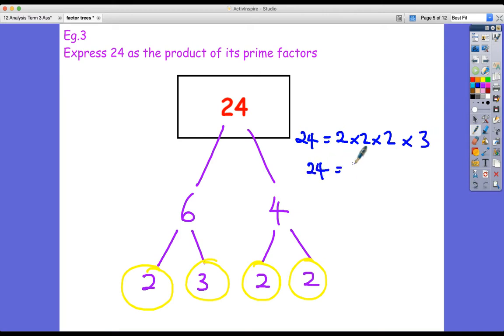So 24. What's two times two times two? It's two to the power of three times three. That is a really good answer. And we can check it because two to the power of three, two times two times two is eight times three, eight times three, 24. It works.